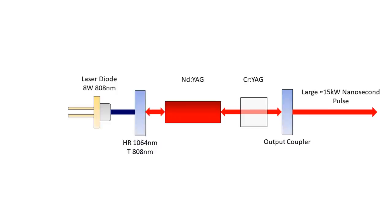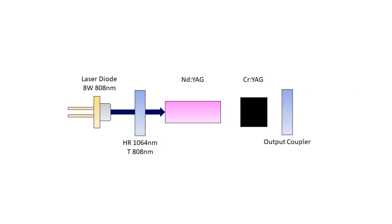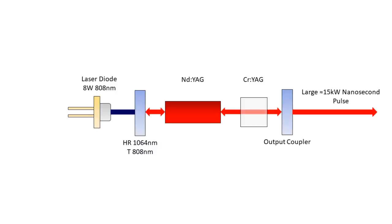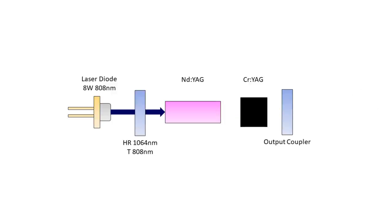Once the pulse has been emitted the neodymium atoms in the neodymium YAG rod are repopulated by the pump laser diode and the process repeats over and over. So a continuous train of high powered pulses is emitted. The mechanism is analogous to the relaxation oscillator that you might be familiar with in electronics.